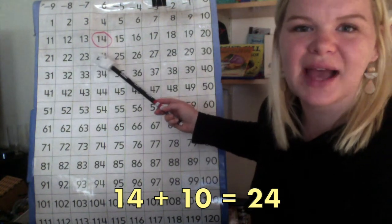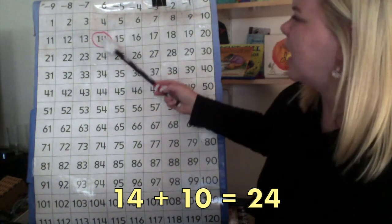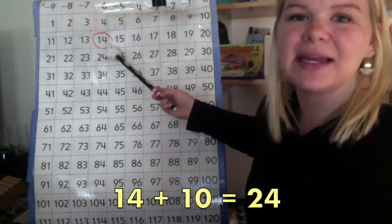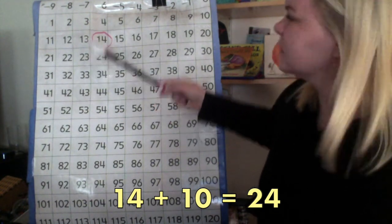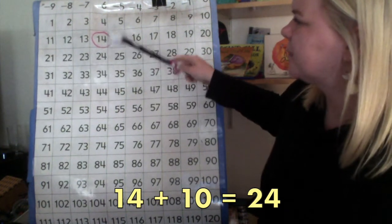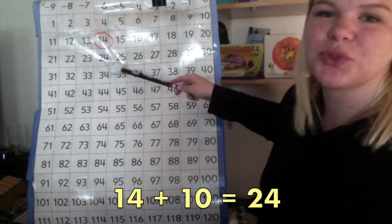So, when I first looked at this problem, I could recognize that all I need to do is hop down for plus 10. So, 14 plus 10 equals 24.